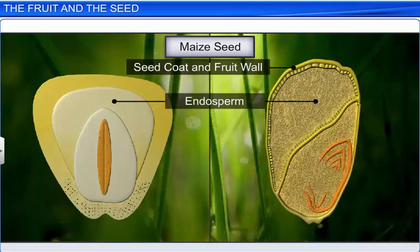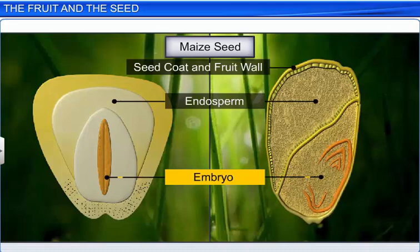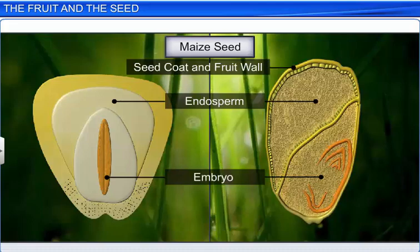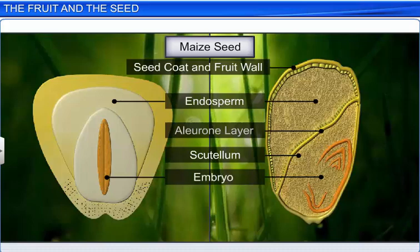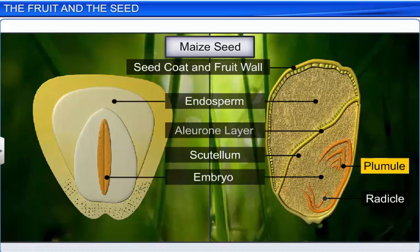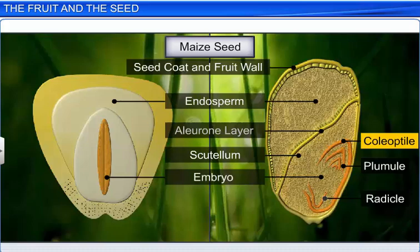The endosperm of maize is bulky and stores food, while the embryo is tiny and is placed in a groove at one end of the endosperm. The embryo is separated from the endosperm by a proteinous layer known as the aleurone layer, and is made up of a single large shield-shaped cotyledon called the scutellum. The embryo also has a short axis with a plumule and a radicle. The plumule is enclosed by a sheath called the coleoptile, and the radicle by a sheath called the coleorhiza.